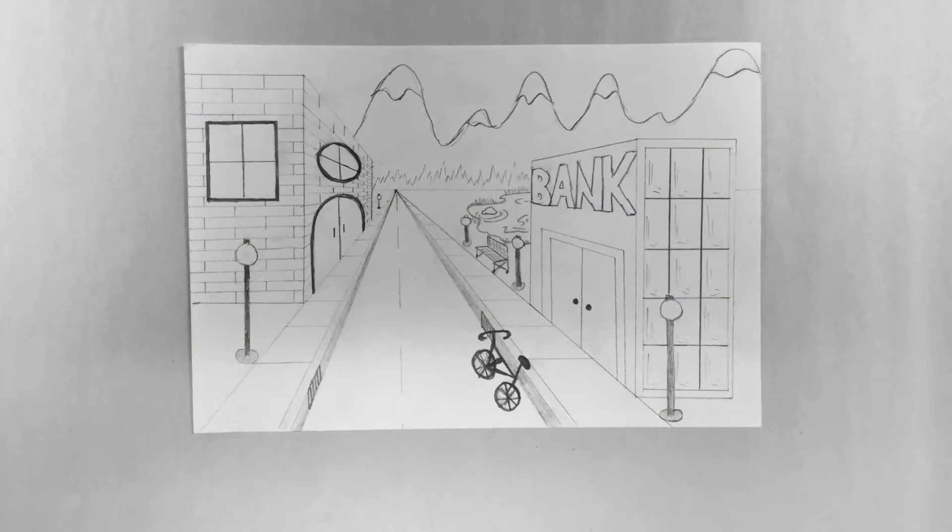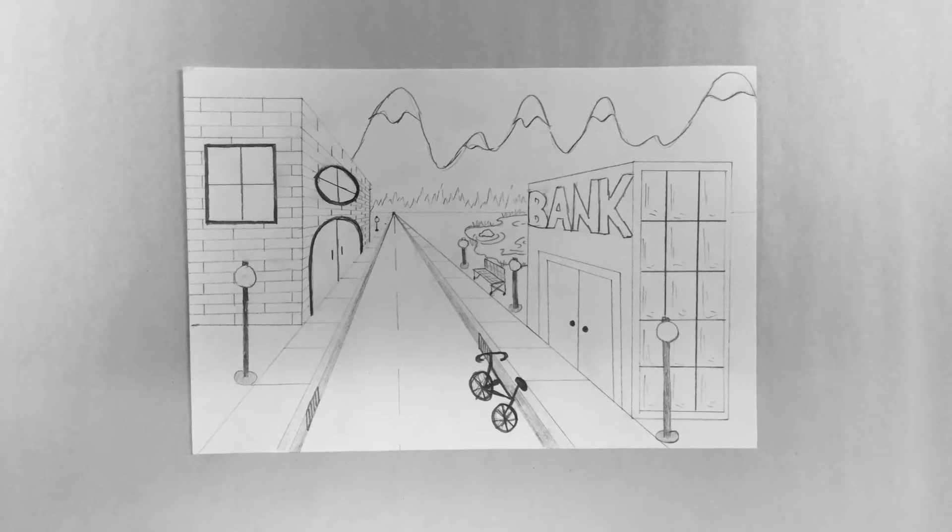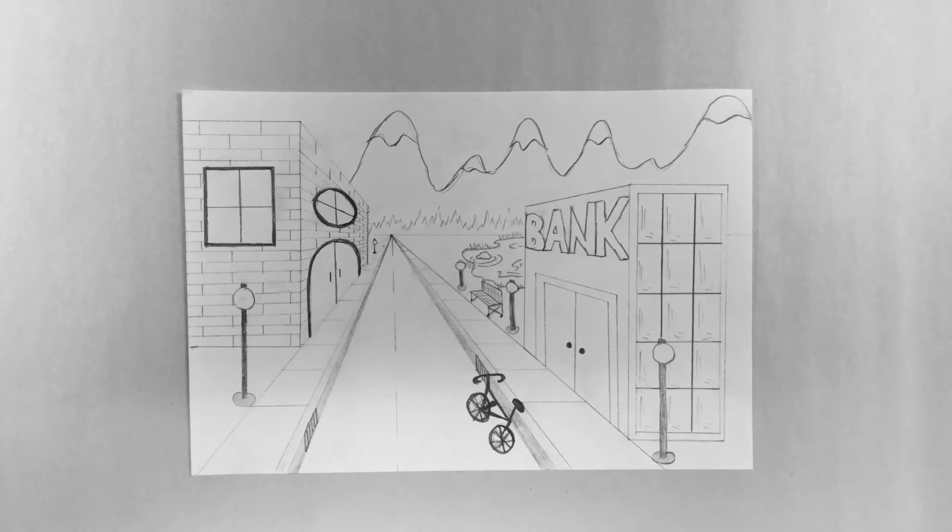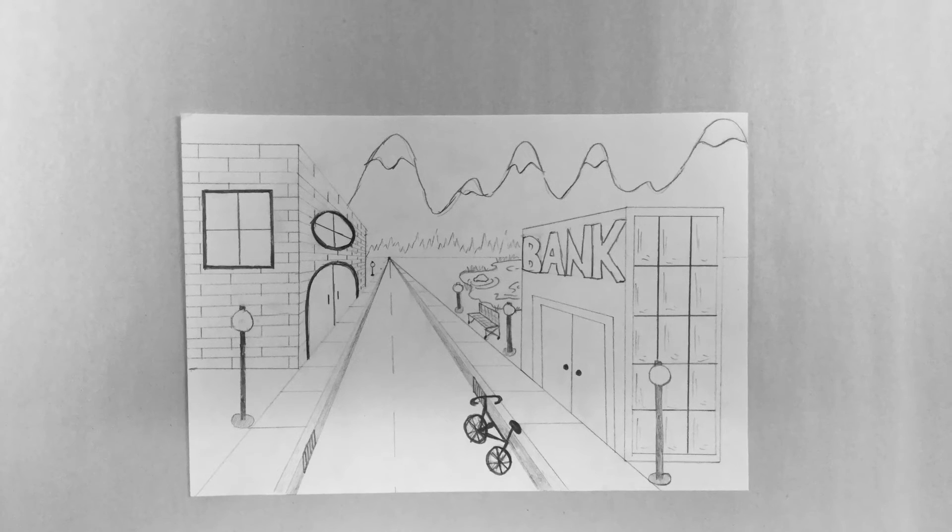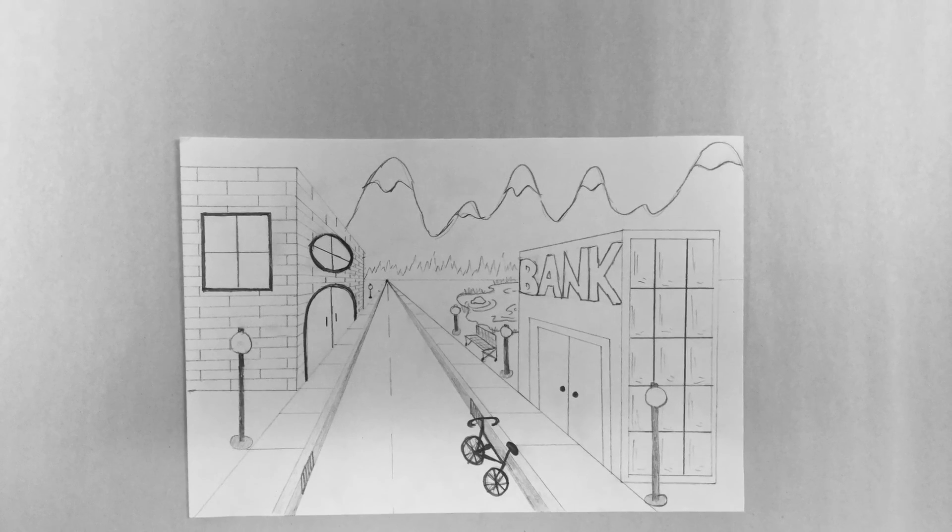I can do the same technique with things like lampposts. So here's an example with lampposts that are both on the left and the right side of the road using the guidelines just like I made for the trees.